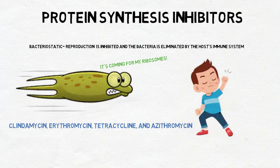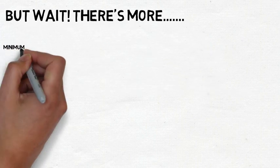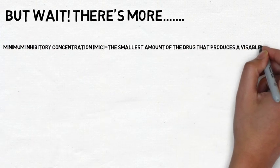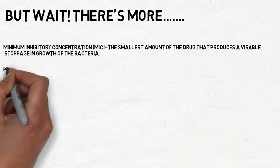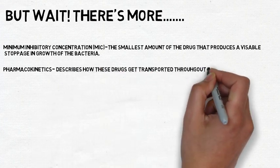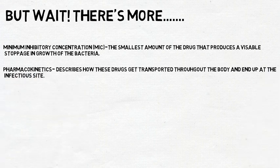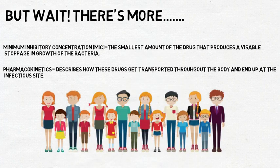These bacteriostatic antibiotics include clindamycin, erythromycin, tetracycline, and azithromycin. In addition to pharmacodynamics, there are additional factors affecting antibiotic efficacy: minimum inhibitory concentration, which is the smallest amount of drug that produces a visible stoppage in bacterial growth; and pharmacokinetics, which describes how drugs are transported throughout the body to reach the infectious site. These factors may not be consistent from person to person and definitely not between adults and children.